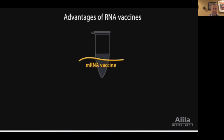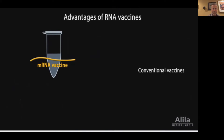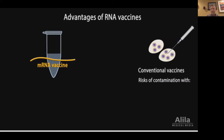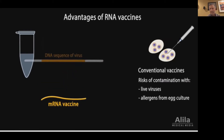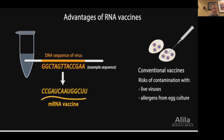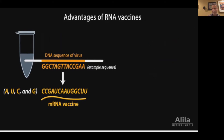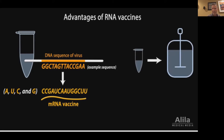RNA vaccines are easier and safer to produce than conventional vaccines. Conventional vaccines typically require growing large amounts of infectious viruses, usually in chicken eggs, and then inactivating them. Vaccines produced this way risk contamination with live viruses and allergens from egg culture. Such risks don't exist with RNA vaccines because mRNA molecules can be synthesized in a cell-free system using a DNA template. The mRNA is made from the same building blocks as natural mRNA. The relative simplicity of the production process makes it easier to standardize and scale, enabling rapid responses to emerging pandemics. If the virus mutates, it is also simple to change the mRNA sequence to match the mutation.